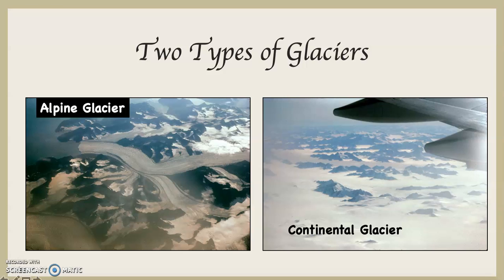Alpine glaciers flow through a mountain valley that was once a river valley — in other words, there used to be running water flowing through the valley. Because alpine glaciers go through mountain valleys, they are controlled by the configuration of the landscape. As the alpine glacier is going through the valley, if the valley turns, the glacier turns.